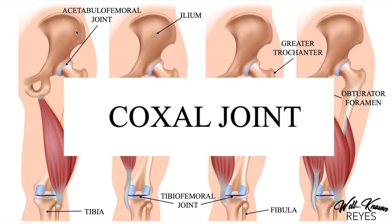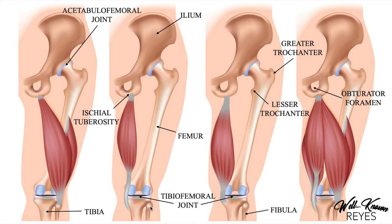Make sure you know both of them: acetabulofemoral joint and coxal joint. Then this one is the largest joint we have — it is the tibiofemoral joint, the knee joint, and it's just a hinge joint. The articulating surface of the femur glides over the surface of the tibia, and as a result we get flexion and extension at this joint. So make sure you understand the different names of the joints and different bony landmarks.